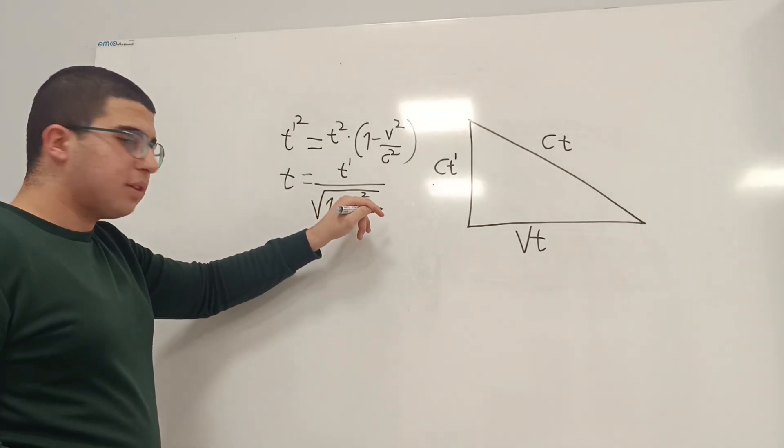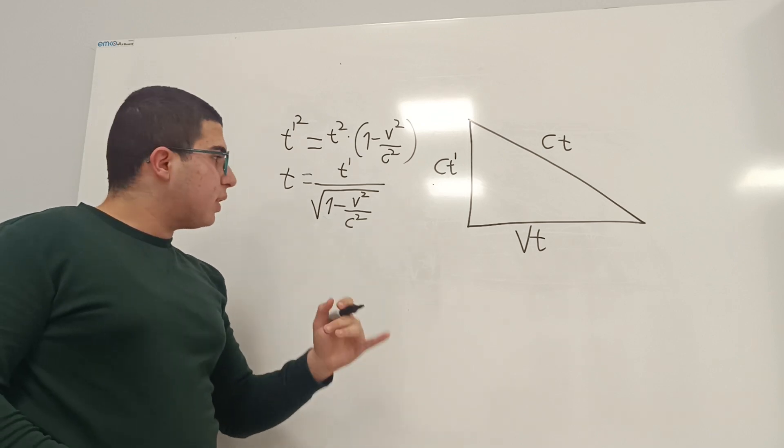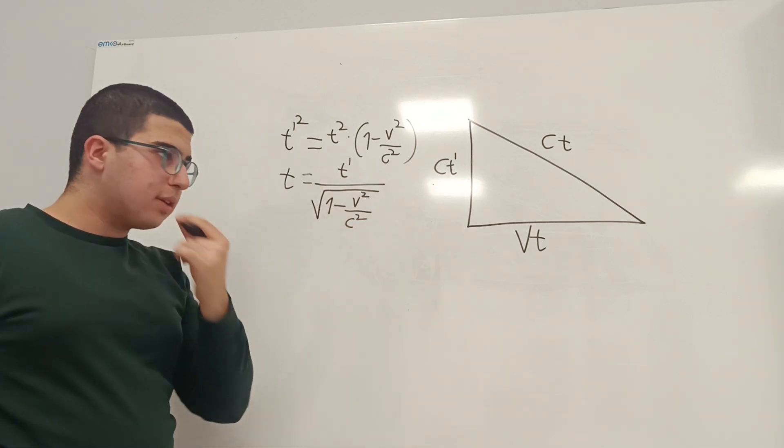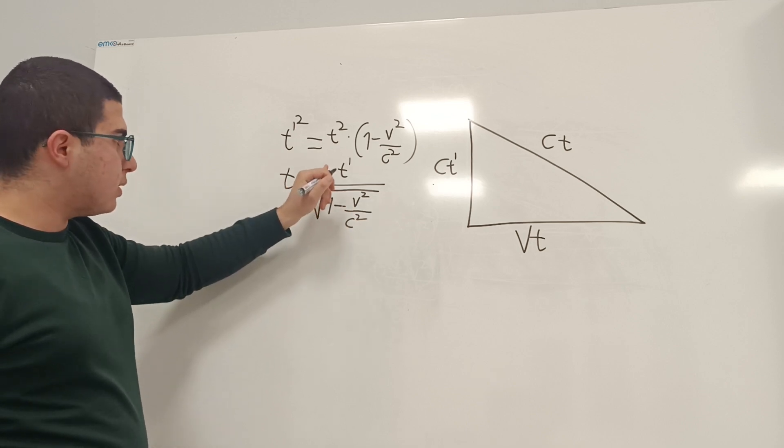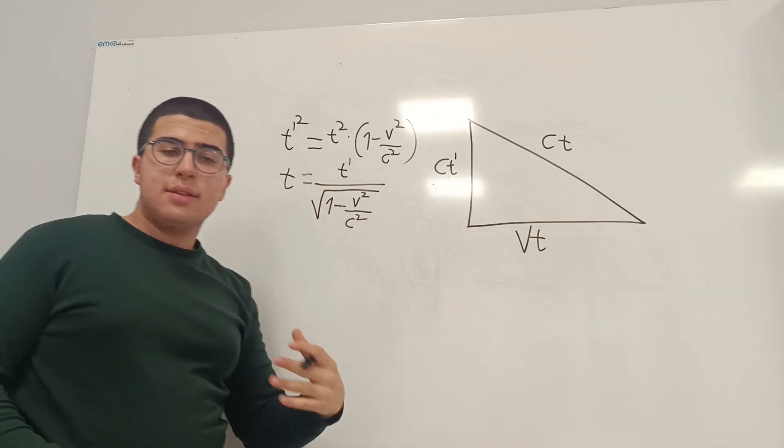If you are standing still, not moving, if you plug in 0 for v, this term is 0. So, this term is 1. So, it is t prime over 1. And t is equal to t prime. So, if you are standing still, time doesn't slow down for you.